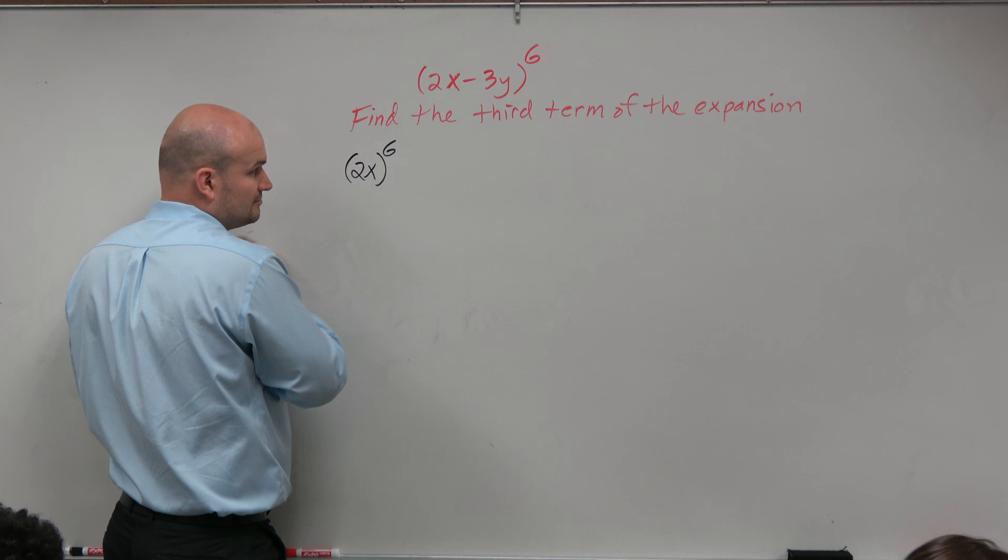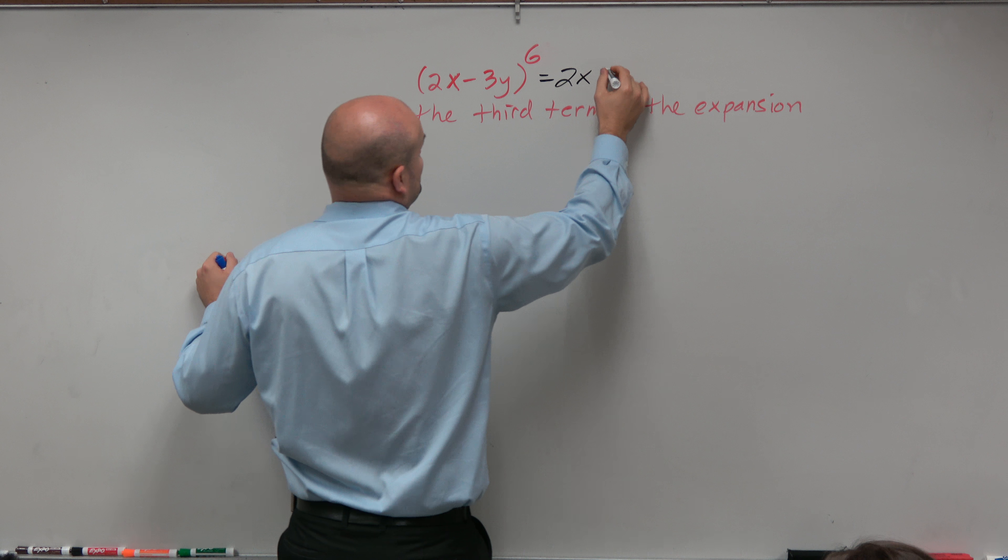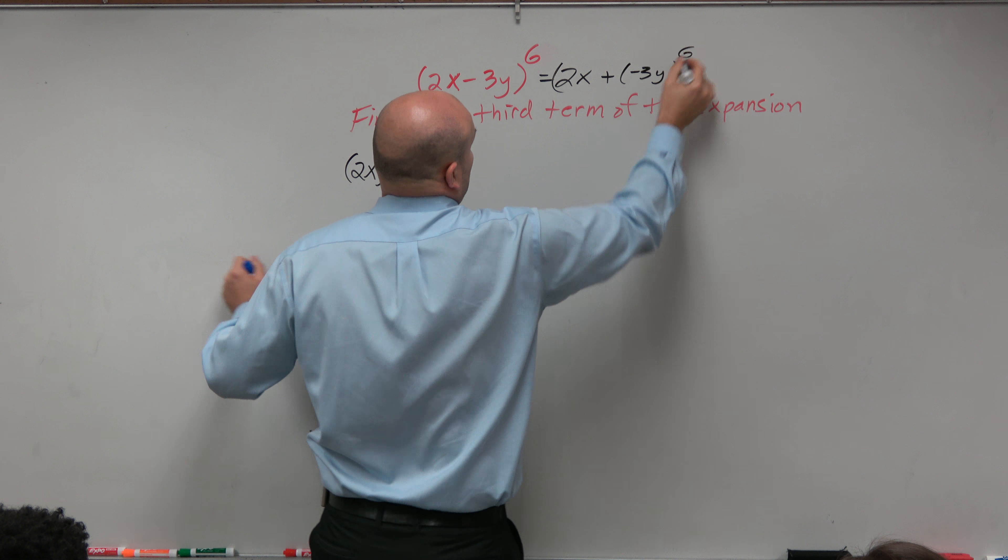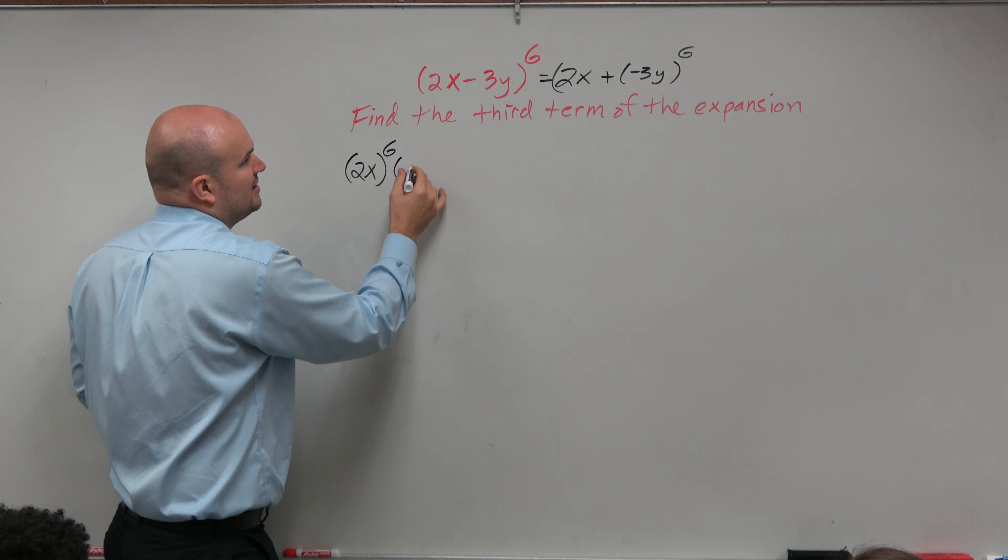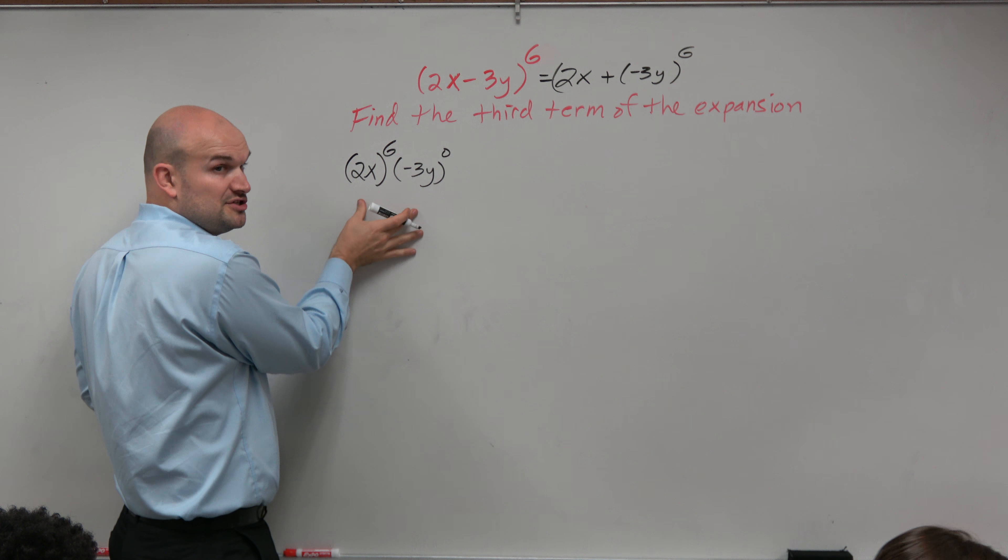And then the first one, now again, we could also rewrite this as 2x plus negative 3y. And the reason why that's important is because in reality, this is a negative 3y to the zero. Now that's the first term.